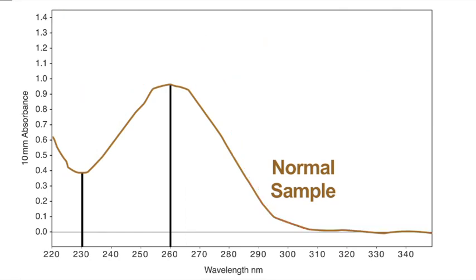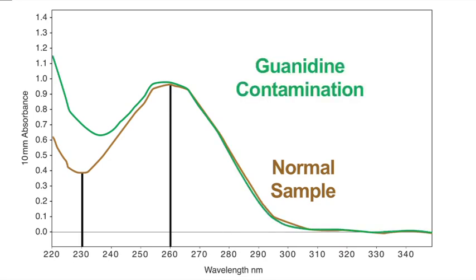Conversely, residual guanidine from column extraction may contribute to a peak near 230 nm and a shift in the trough from 230 nm to approximately 240 nm.